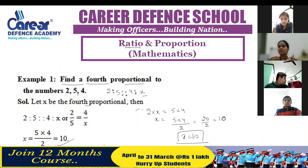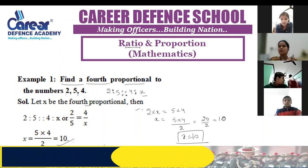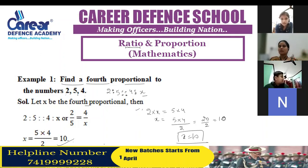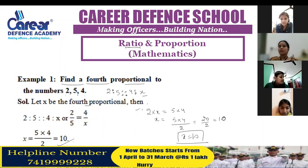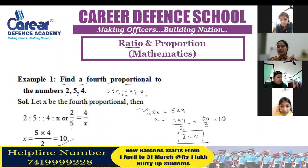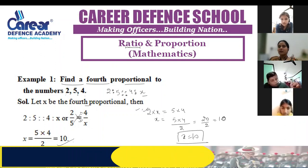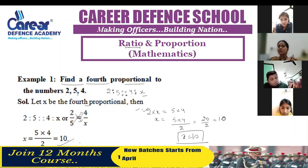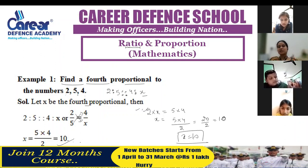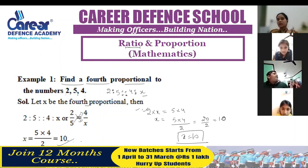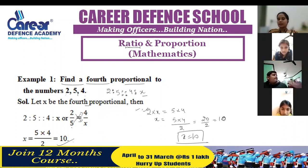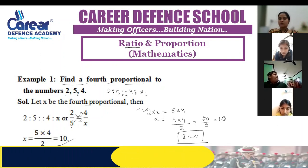Is that clear? Either you apply the property or you cross-multiply. Both methods are possible.